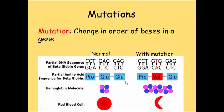The order of amino acids is what affects the shape and the function of the protein. You can see how a change in the order of bases in a gene, known as a mutation, will cause a change in how the protein works.